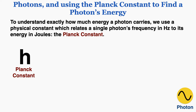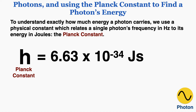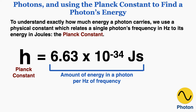To understand exactly how much energy a photon carries, we use a physical constant which relates a single photon's frequency in Hertz to its energy in joules — the Planck constant. We symbolize the Planck constant with lowercase h. Its exact value is 6.63 times 10 to the negative 34th joule seconds. This number tells us the exact amount of energy in a photon per Hertz of frequency.